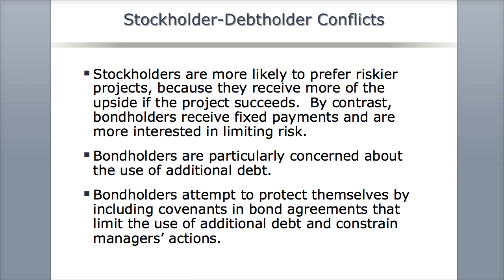Looking at stockholder and bondholder conflicts: when a company raises money through issuing bonds, stockholders are more likely to prefer riskier projects with a bigger upside if the project succeeds, whereas bondholders don't want to risk the fixed payments they're going to receive, so they want to limit risk. Bondholders don't really share much of the upside of the company; they would rather the company be safe and stable. Bondholders can protect themselves by including covenants in their bond agreements that limit the use of additional debt or constrain certain managers' actions.